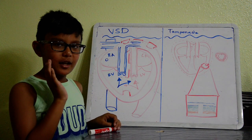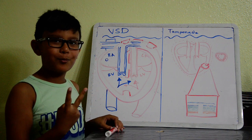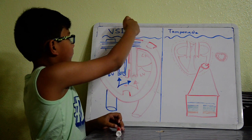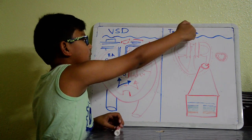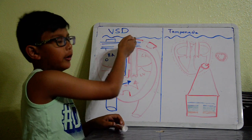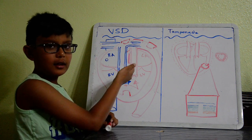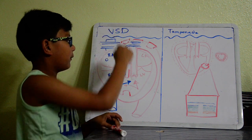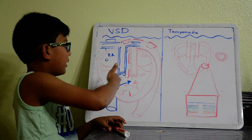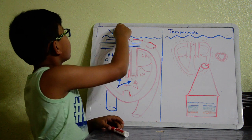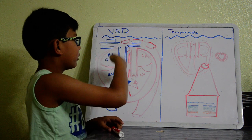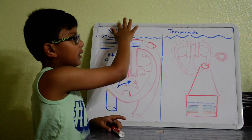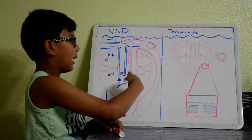Hi, I'm Steven. Today we'll be talking about two pretty life-threatening diseases: VSD and tamponade. First, VSD stands for ventricular septal defect. The V tells you where it's located — between the ventricles. Septal, the S, tells you what it's affecting — the lower septum right here.